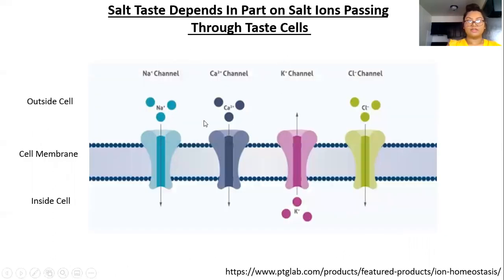Here we have an image of ion channels. We can see that this is the outside of the cell, this is the inside of the cell, and this is the cell membrane. Ion channels are proteins that make a window to allow salt ions to pass through the salt taste cells selectively. For example, we can see that this is a sodium channel where only sodium passes through. This is a potassium channel where only potassium passes through. And this is a chloride channel where only chloride passes through.